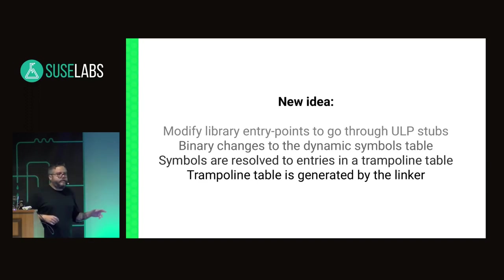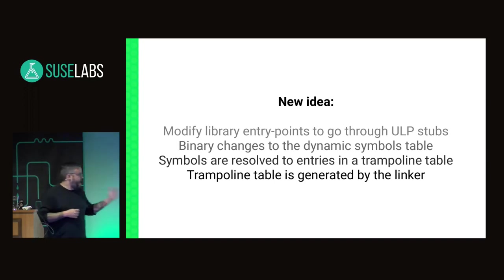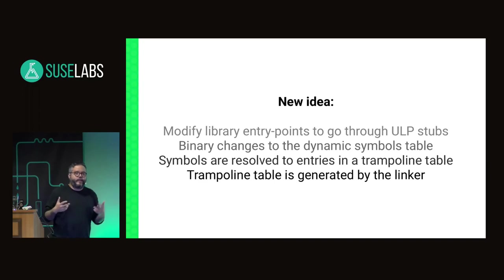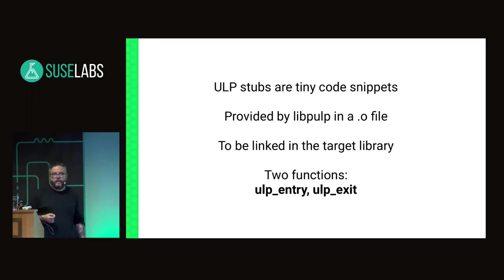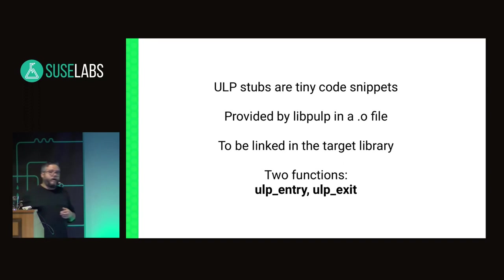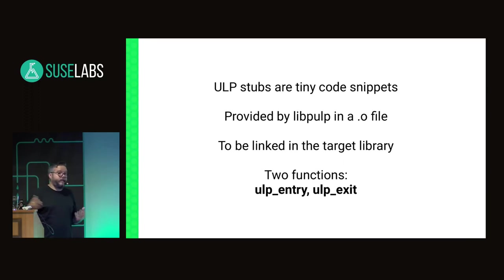These ULP stubs are very tiny code snippets — functions implemented in assembly, less than 100 lines of code. They're provided by LibPulp and you can just link them into your library. It's just a linker-level modification. We have basically two functions: ULP entry and ULP exit. The trampoline is what your code goes through whenever calling a function in that library. The first thing the trampoline does is call ULP entry, which uses a shadow stack variable. If it's zero, we save the return address of the function being called into our shadow stack and replace the return address with the address of ULP exit.